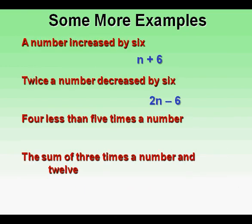4 less than 5 times a number. This translates to 5n minus 4.